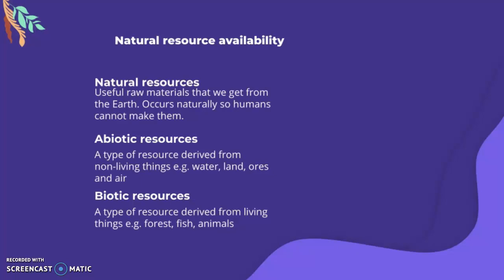Natural resources are useful raw materials that we get from the earth. They occur naturally so humans cannot make them. Abiotic resources are derived from non-living things such as water, land, and air. Biotic resources are derived from living things such as forests, fish, and animals.